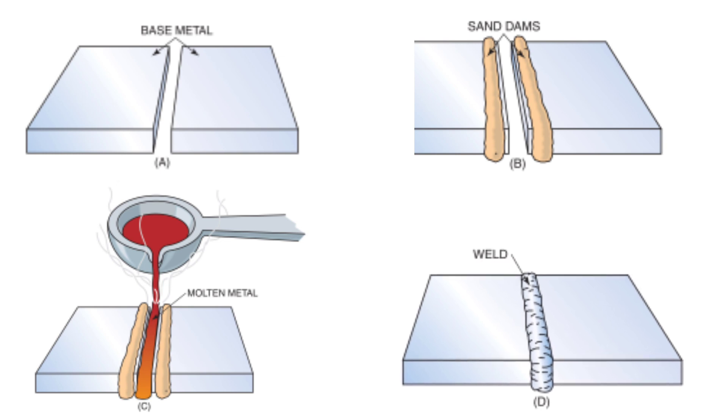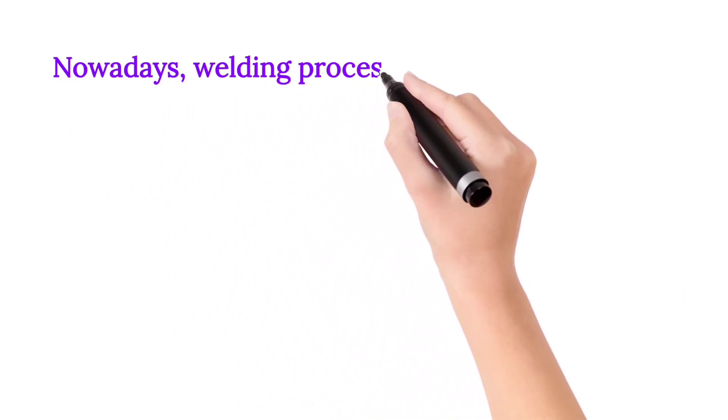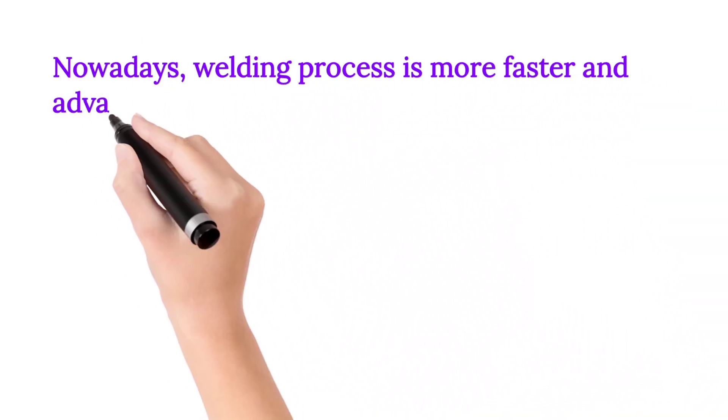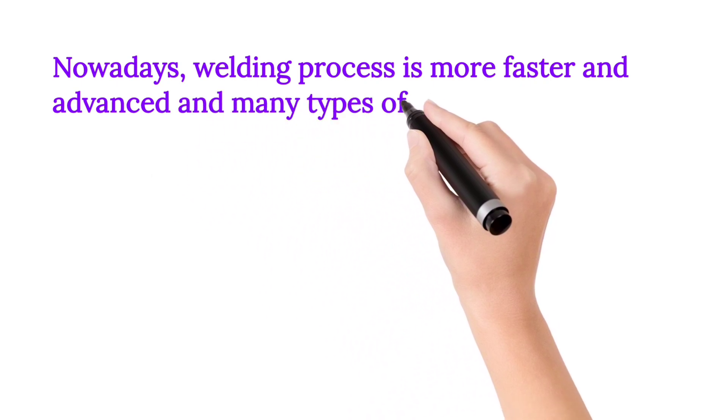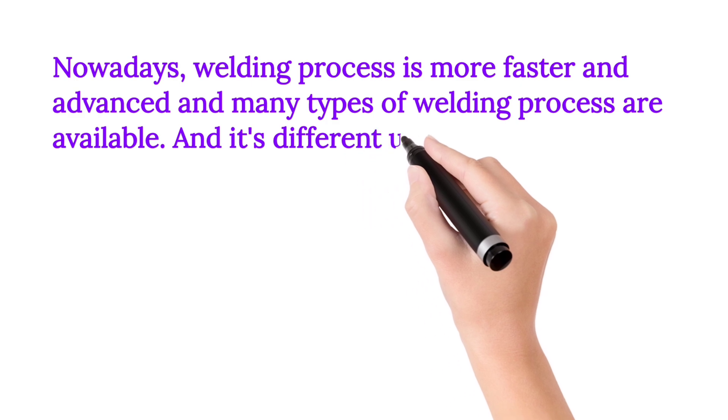Diagram D: After cooling down the temperature, the sand dams are removed and a permanent finished welded plate is made. Thus two pieces of metal are fused together to form a single piece of metal. This method is also called the direct casting method. Nowadays, welding process is much faster and advanced and many types of welding processes are available with different uses too.